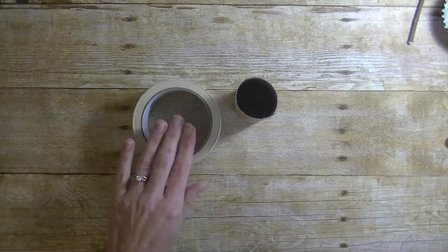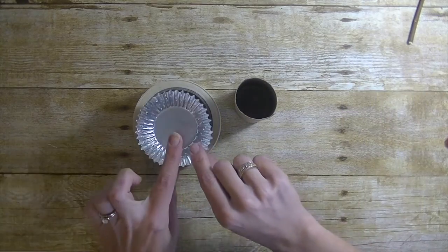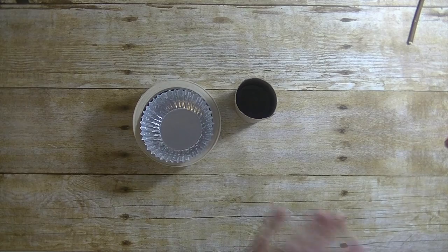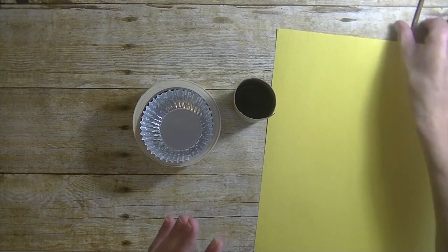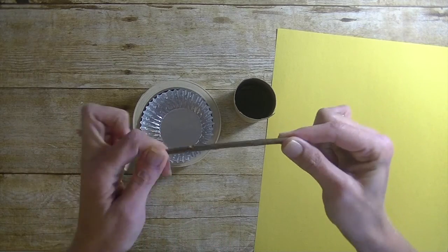To get started, you're going to need a toilet paper tube, some masking tape, a little cupcake liner, yellow construction paper, and a few markers, and either a stick like a branch off a tree or a popsicle stick.